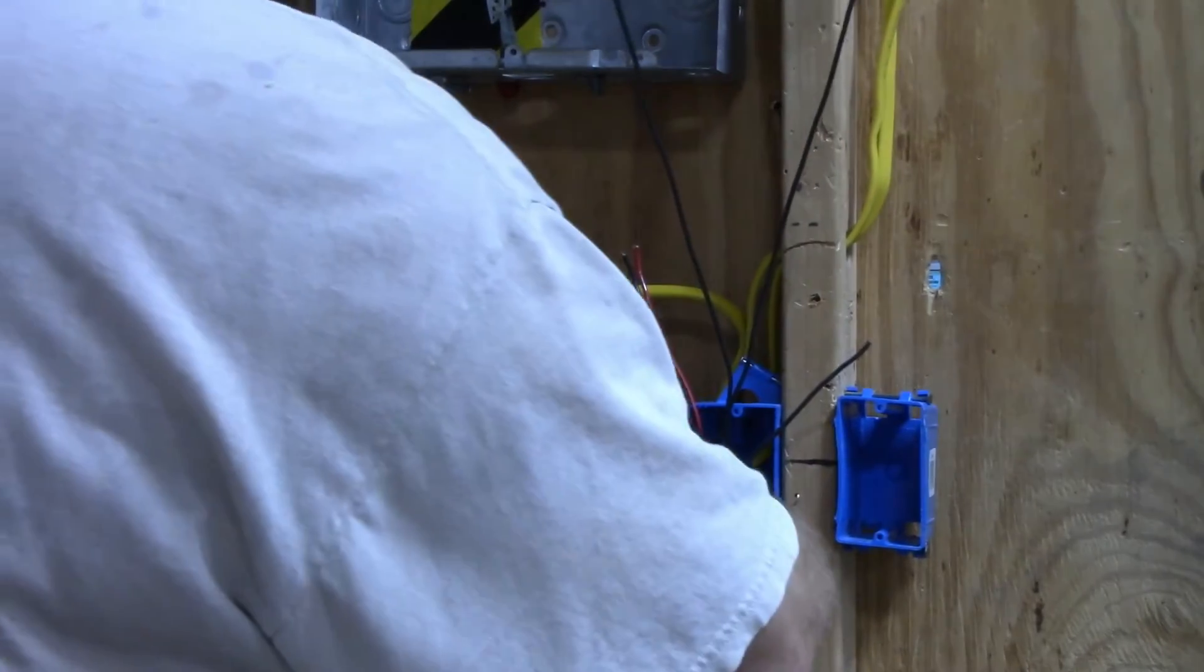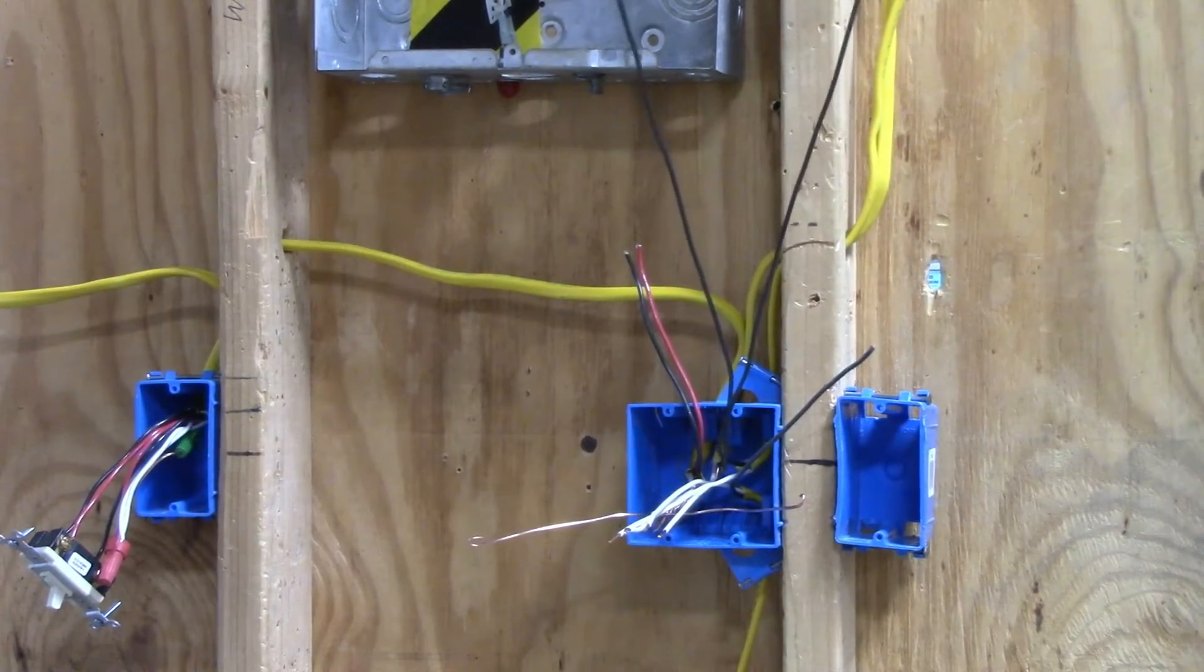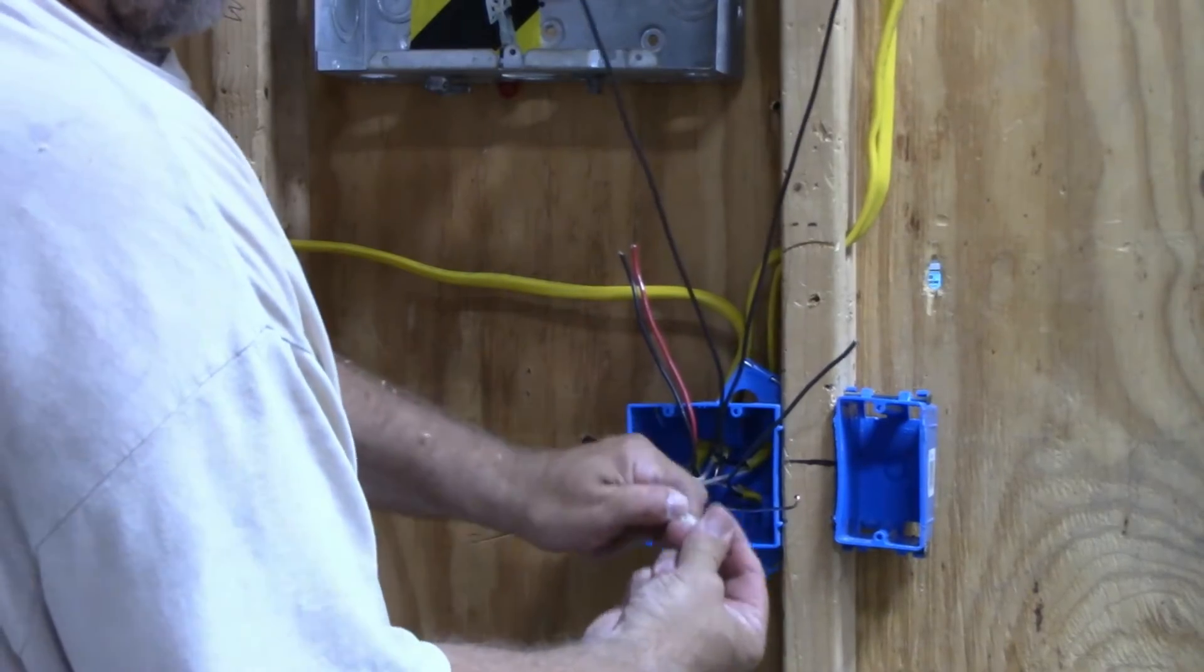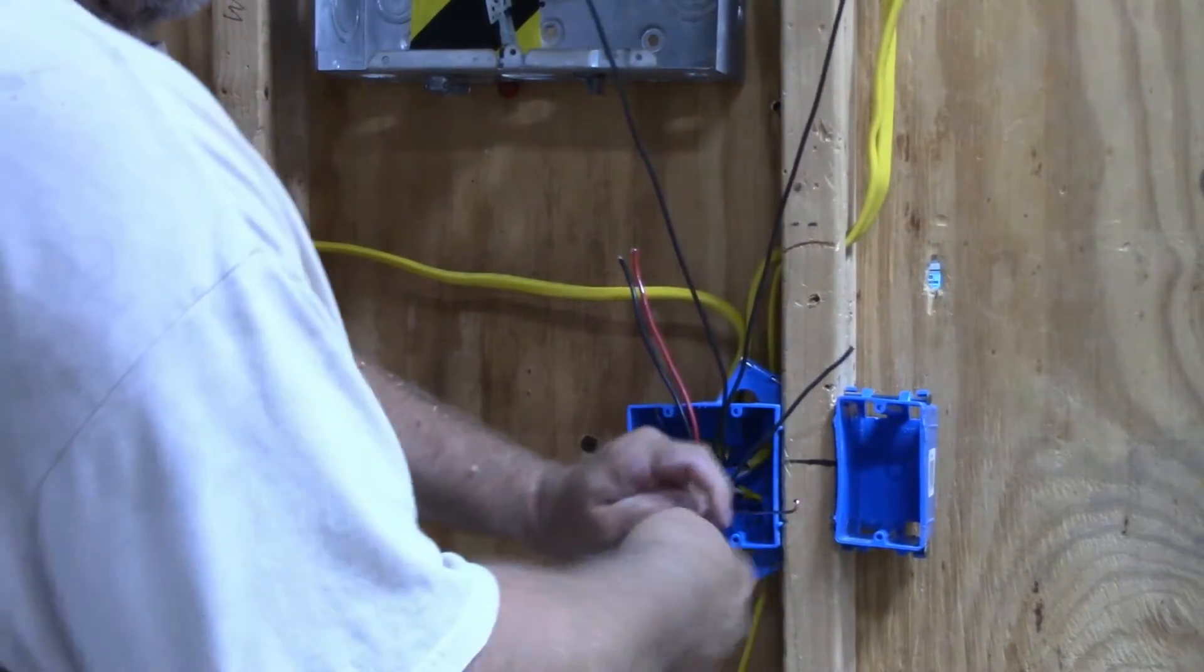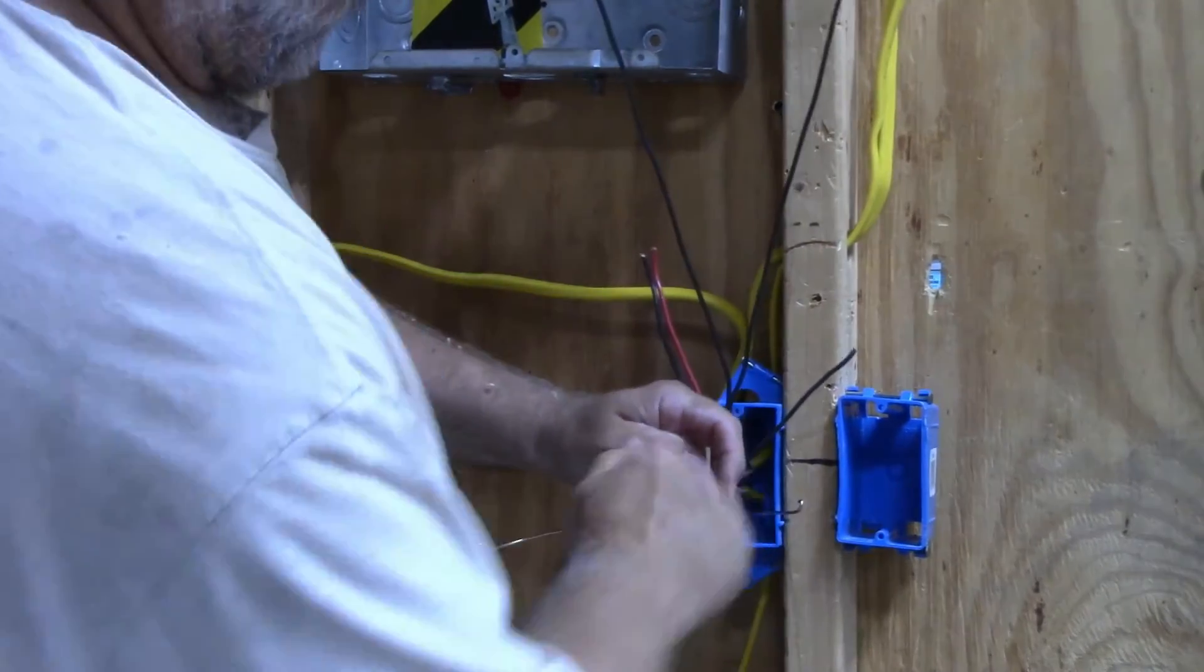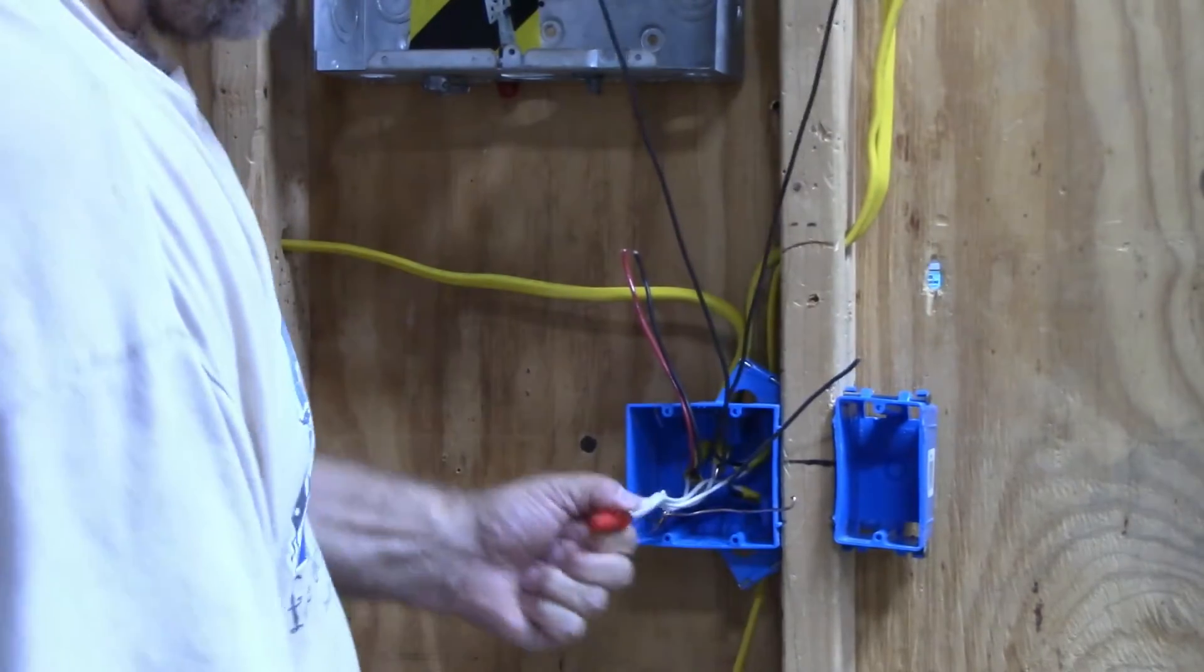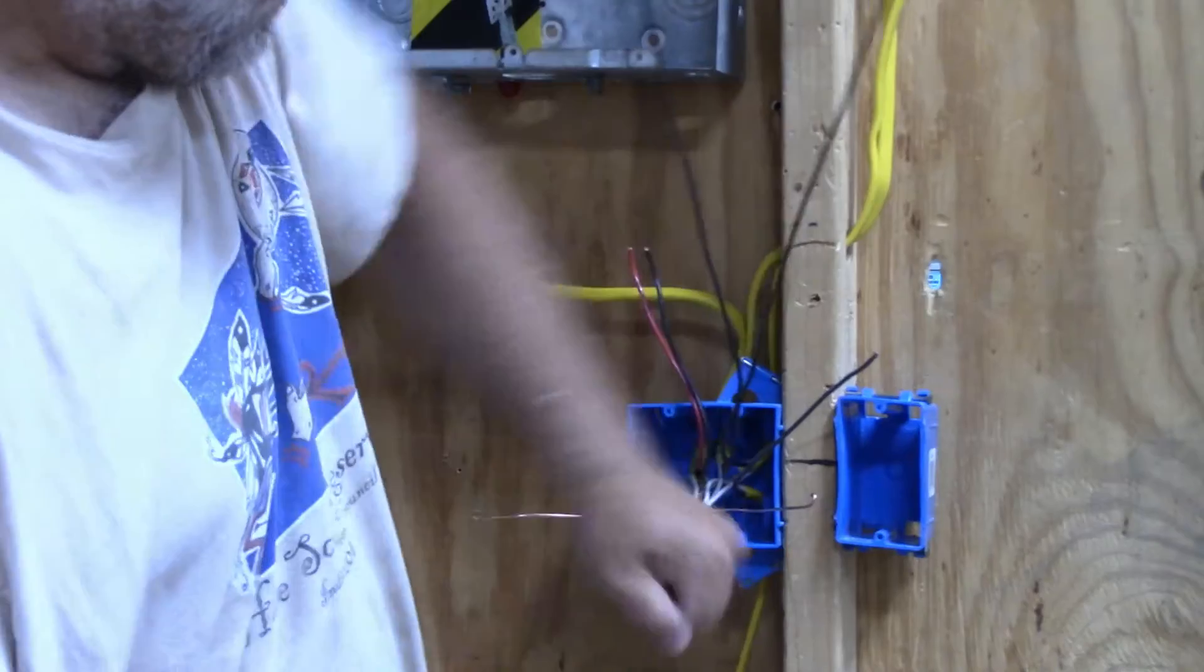Strip them back about three-quarters of an inch. I have four wires, so a red wire nut will work with these four wires. Make sure you get a good tight connection so it doesn't read open neutral if you were to put your tester on here.